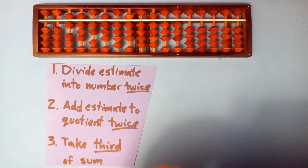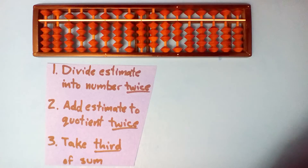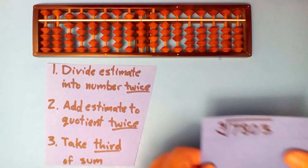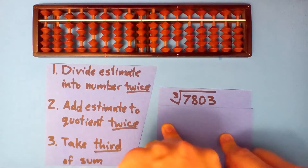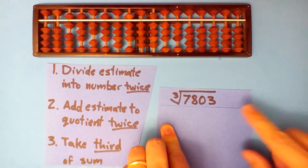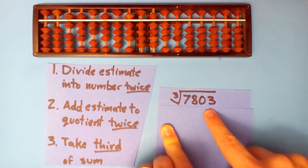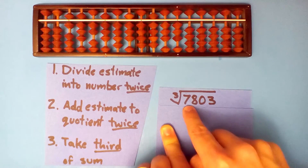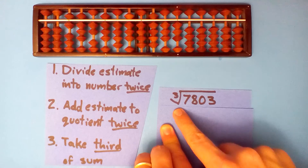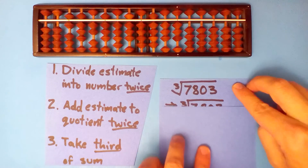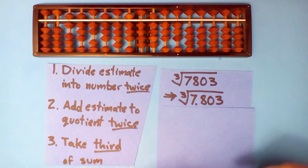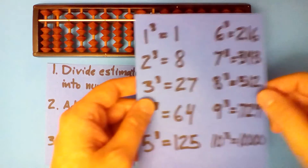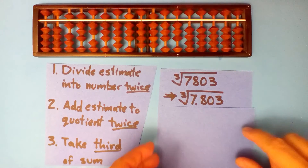Let's do one more and I'll take a hands-off approach. What is the cube root of 7803? The first thing to note is that we only take numbers between 1 and 1000, so we're going to move the decimal point over three times. Instead of taking the cube root of 7803, let's take the cube root of 7.803.